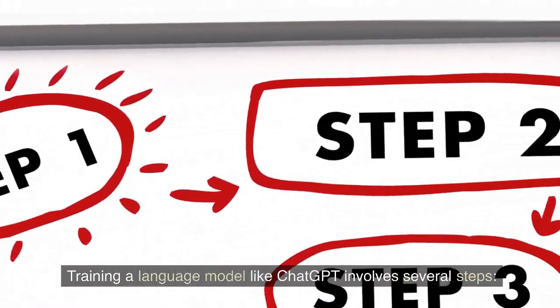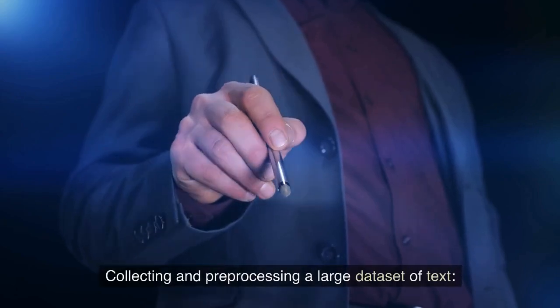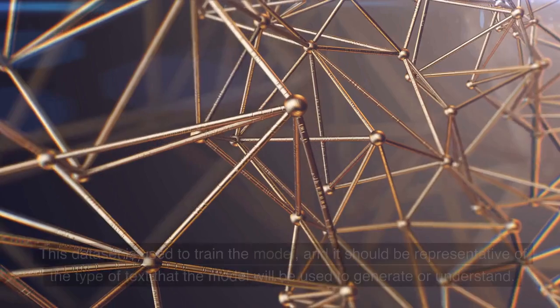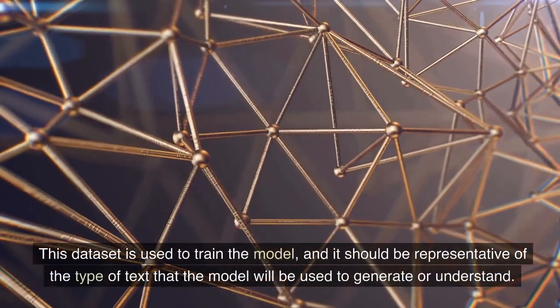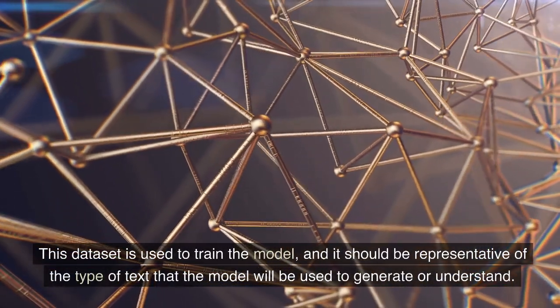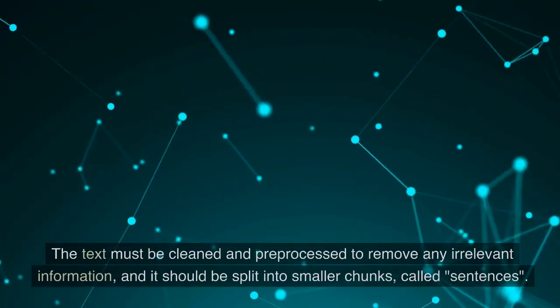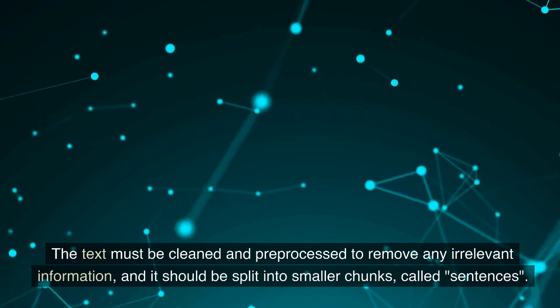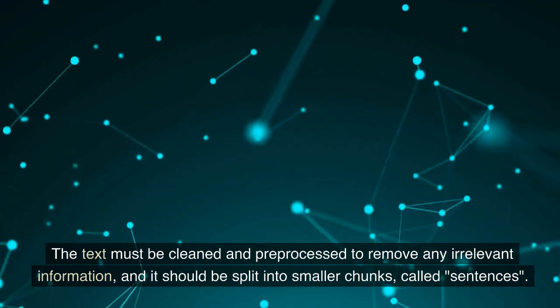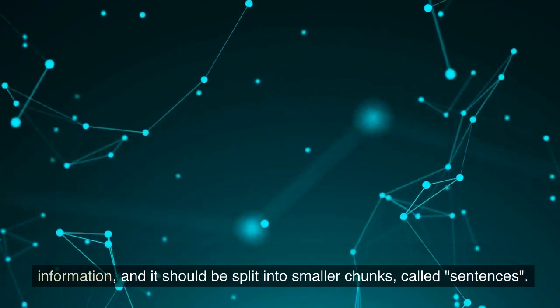Training a language model like ChatGPT involves several steps. Collecting and preprocessing a large dataset of text. This dataset is used to train the model and it should be representative of the type of text that the model will be used to generate or understand. The text must be cleaned and preprocessed to remove any irrelevant information, and it should be split into smaller chunks called sentences.